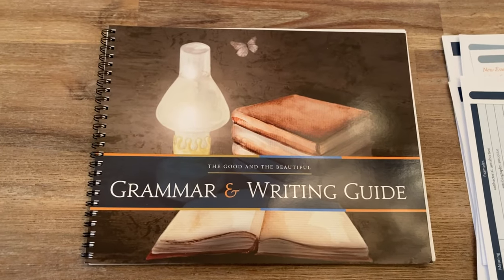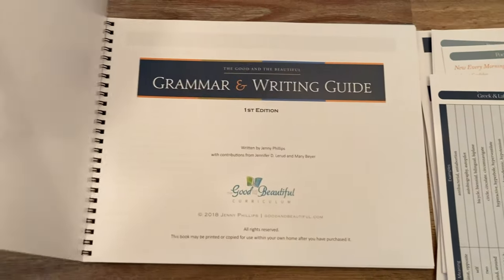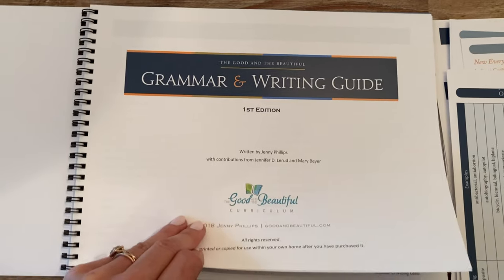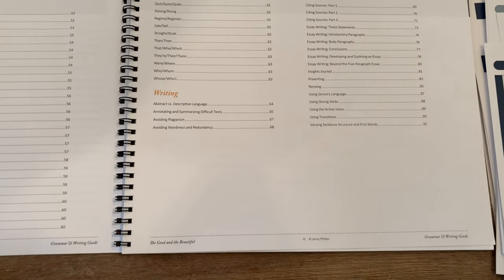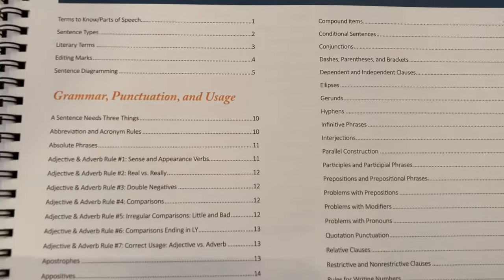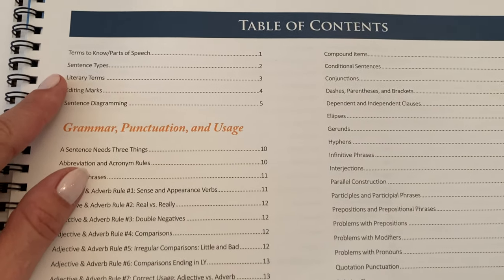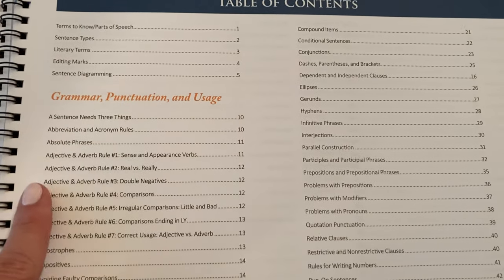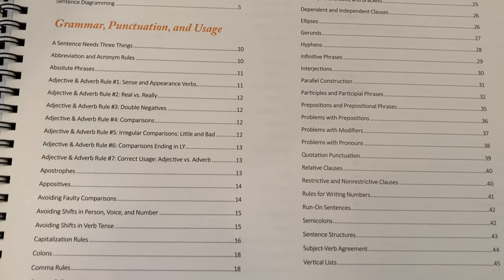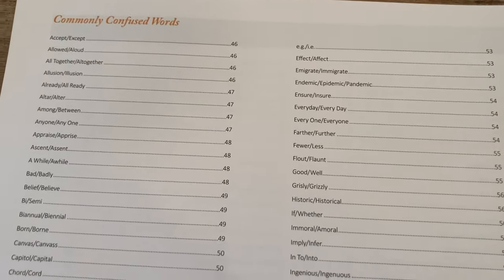The next thing is the grammar and writing guide, and again you will use this all three years of The Good and the Beautiful Language Arts. It is very extensive. In the table of contents you'll see it covers grammar, punctuation, and usage — terms to know, parts of speech, sentence types, literary terms, editing marks, sentence diagramming, different types of clauses and sentences, and commonly confused words.